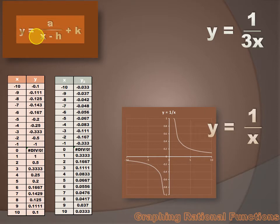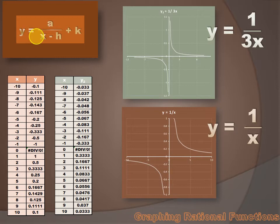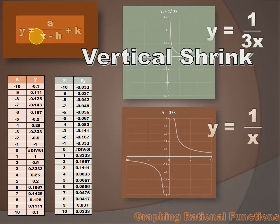How's that going to change the graph? In the parent function, when x equaled 5, y equaled 0.2. But in our new function, when x equals 5, y is only going to be 1 third of 0.2 — it's going to be 0.0667. It's going to be much closer to the x-axis. When we graph this new function, you'll see that all the lines are closer to the x and the y-axis. We've shrunk this function down, made it closer to the origin. We've given it vertical shrink.